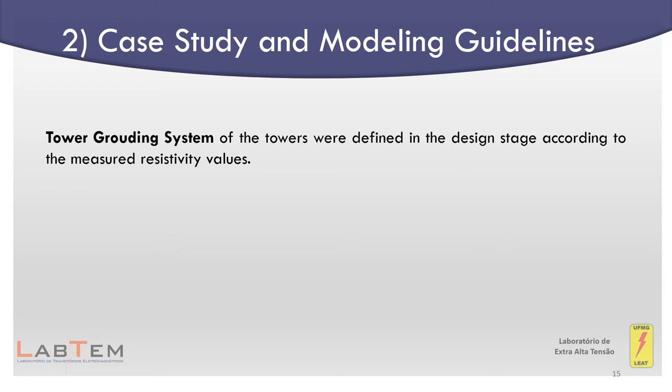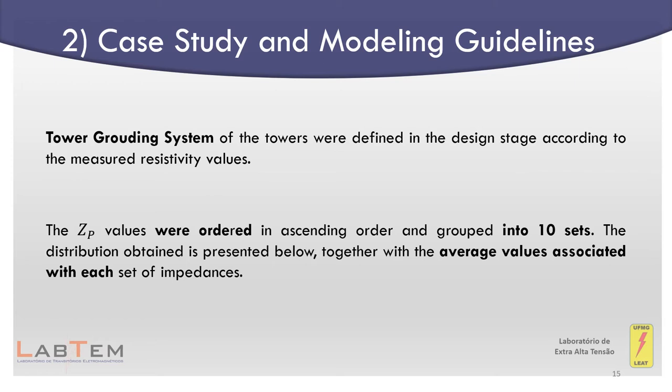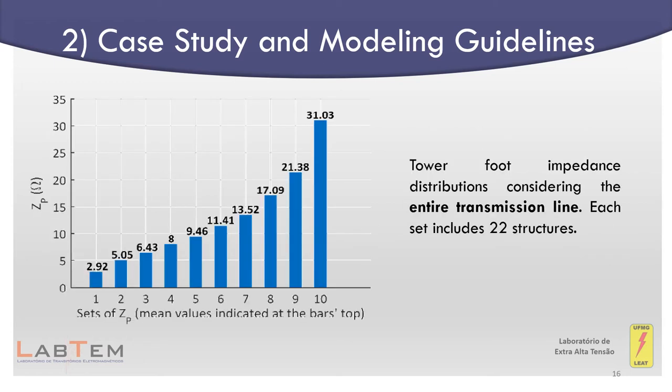The tower ground systems were defined in the design stage according to the measured resistivity values. The low-frequency ground resistances were calculated from the effective tower perimeter for each configuration. Impulse impedances were then estimated using the impulse coefficient. The impulse impedance values were ordered in ascending order and grouped into 10 sets. The distribution obtained is presented, together with the average values associated with each set, and this is used in the conventional methodology detailed in the next section.